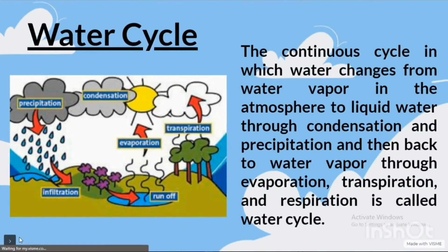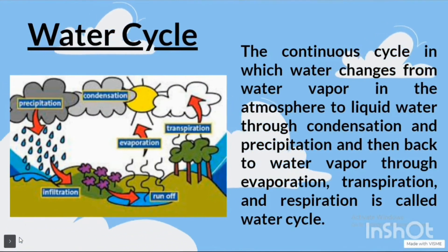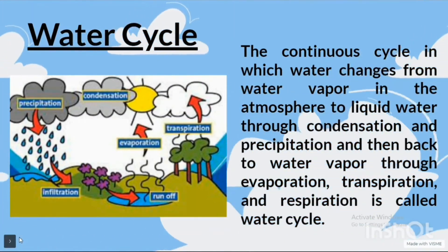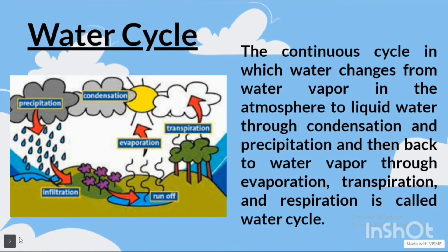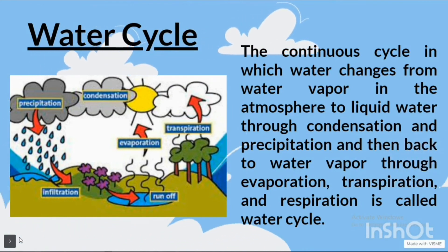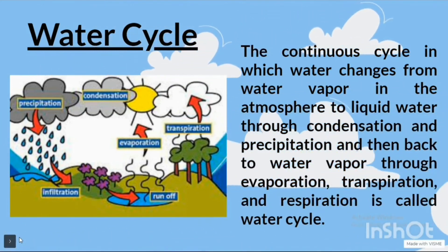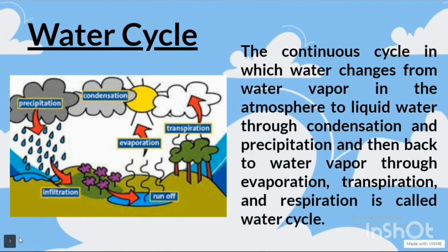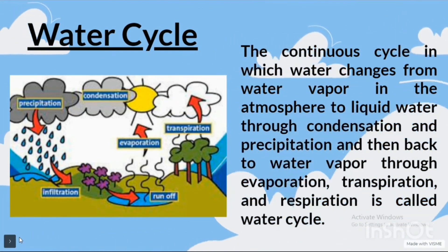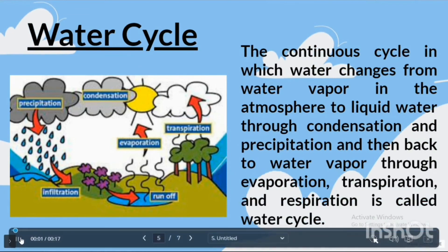The water cycle is the continuous cycle in which water changes from water vapor in the atmosphere to liquid water through condensation and precipitation, and then back to water vapor through evaporation, transpiration and respiration.